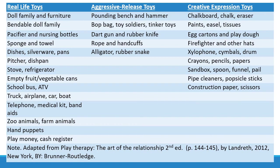Then you have aggressive release toys: a pounding bench and hammer, a bop bag, toy soldiers, tinker toys, a dart gun with darts, a rubber knife, a rope and handcuffs, and aggressive animals like alligators or a rubber snake. People who aren't trained counselors sometimes ask, 'You have a gun and a knife?' Yes — because in this safe, controlled environment is where we want kids expressing these feelings so they can release them, process them, and learn how to handle them in healthy, non-destructive manners.